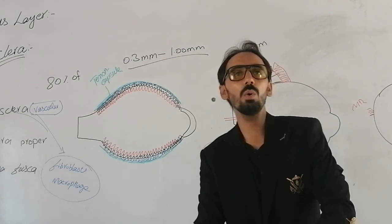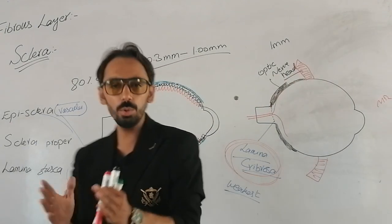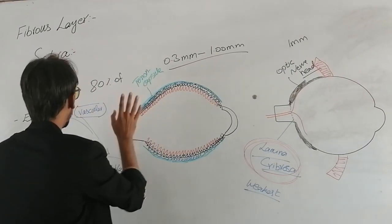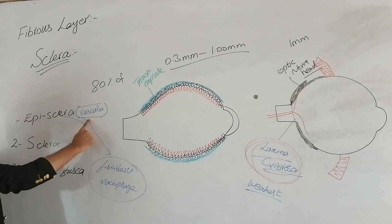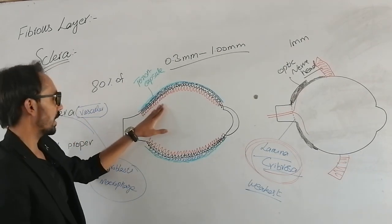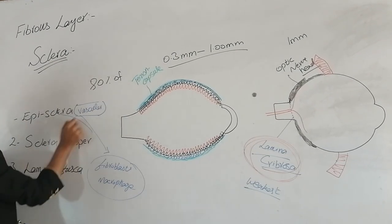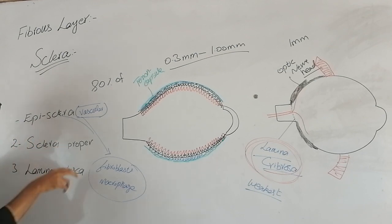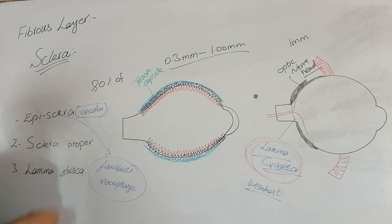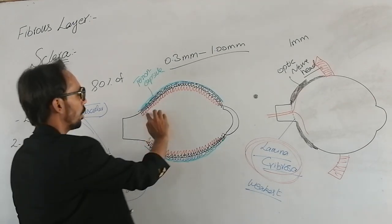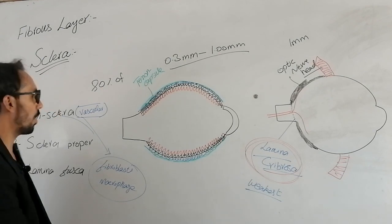Now we will discuss about the different nourishment of the sclera. As I told you earlier, we talked about the structure which is the episclera, and I told you that the episclera is a vascular layer. So the sclera proper gains its vascularity and its nutrients from this vascular layer, the episclera. Also, the sclera has two different modes of nourishment: the first is the episclera, and the second is the choroid. So the choroid and the episclera are the two different modes of nutrition for the sclera.